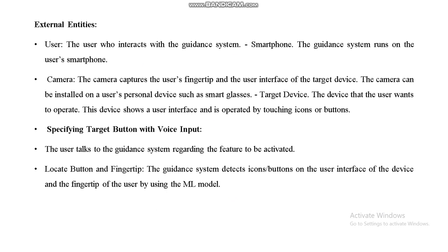The workflow is divided into external and internal entities. External entities include: the user who interacts with the guidance system; the smartphone the guidance system runs on; the camera that captures the user's fingertip on the target device's interface — which can be installed on smart glasses; and the target device the user wants to operate, which shows the user interface and is operated by touching icons or buttons. The user talks to the guidance system to specify the feature to be activated, then the system locates the button and fingertip using the machine learning model.